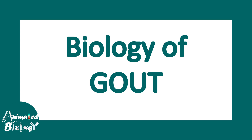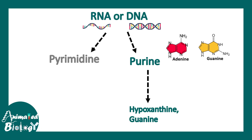Let's understand the biology of gout. When RNA or DNA are broken down, they form pyrimidines and purines. Purines particularly undergo a series of catabolic reactions to yield hypoxanthine and guanine, which lead to the formation of uric acid.